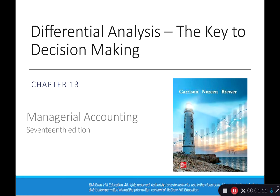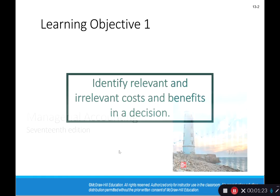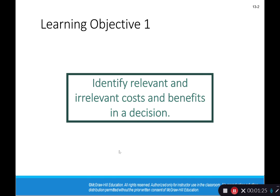Why is this important? Because if we include things that are irrelevant in our decision making, we're going to come to the wrong conclusion. So the first thing we're going to do is identify relevant and irrelevant costs and benefits in the decision, because if we don't, we're going to use the wrong information in our decision making process.